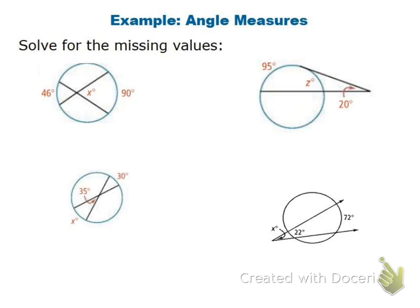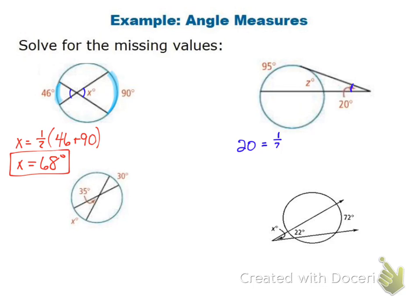For the first problem, the two vertical angles are both X. The arcs that correspond are 90 degrees and 46 degrees. Since the angle is inside the circle, X equals one half times 46 plus 90, so X equals 68. For the second problem, the angle is outside the circle, so I use subtraction: 20 equals one half times 95 minus Z. Multiplying both sides by two gives 40 equals 95 minus Z, so Z equals 55.